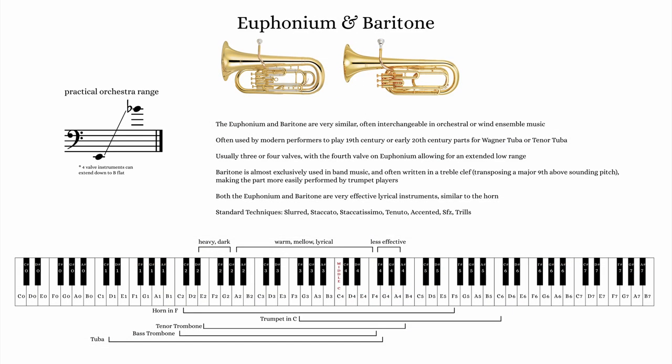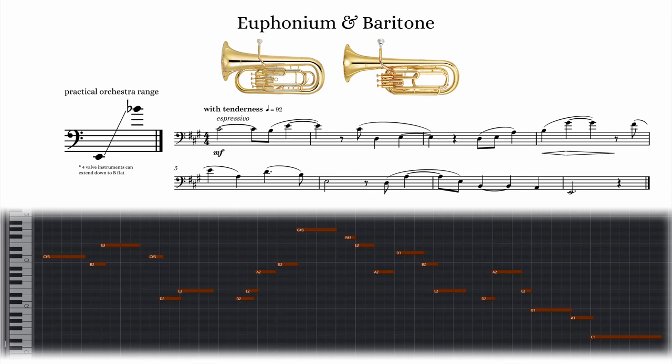The euphonium and baritone are very similar in appearance and sound, and are often used in modern concert bands or in the orchestra as replacements for tenor tuba parts. The euphonium has a range from Bb1 to Bb4, while the baritone has a range from E2 to Bb4. They are used somewhat interchangeably, although the baritone is found almost exclusively in band music. Because the baritone has the same fingering as the trumpet, it's common to see music for baritone written in treble clef, sounding a major 9th lower than written, so that trumpet players can easily read the music. Both the euphonium and baritone have a wonderfully mellow timbre, and are capable of greatly expressive lyricism.